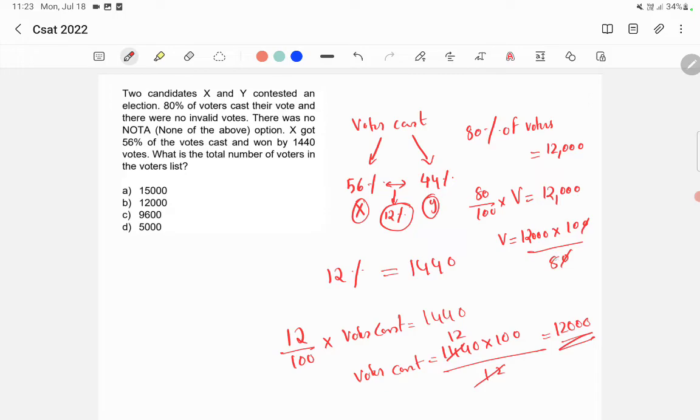So we'll get, we'll divide by 4. So 2, 3,000 and this is 5. So total 15,000. So there are total 15,000 voters in this election. So that is option A is the correct answer.